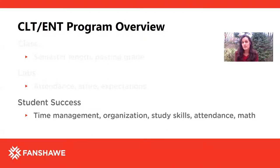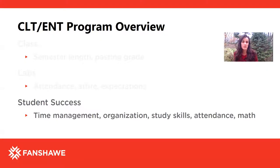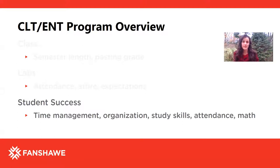The most common academic reason students leave the program is weak math skills. There is a math course every semester except the last, plus at least one chemistry course every semester and physics almost every semester. Math, chemistry, and physics are all math-based. If you're weak in math, the program probably isn't for you. In high school, take the hardest math course you can pass — research at Fanshawe shows that students from harder high school math courses tend to do better in the program.